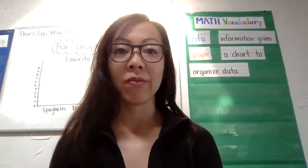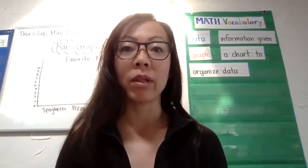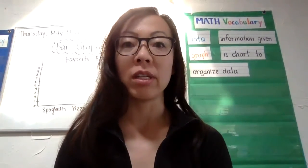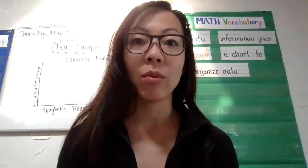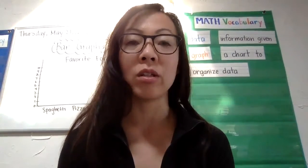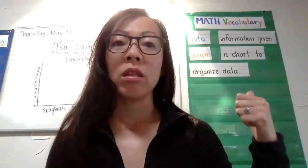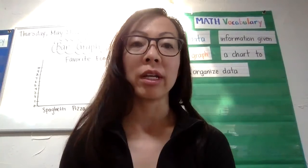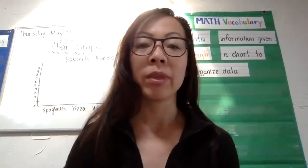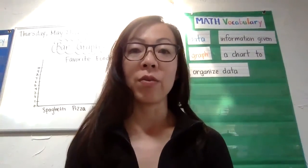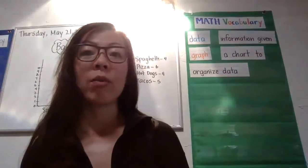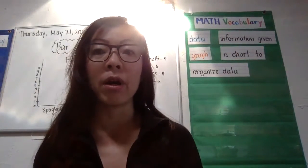Here's some key vocabulary we've been thinking about. The first word is data. Data is information that we're given. When we say the word data, we're talking about the information we're going to use to create a graph. Now, what is a graph? A graph is a chart that organizes our data — it helps us take a quick look and be able to see it. We've been talking about our favorite food and we've made tally charts, pictographs, and today I want to show you how to make a bar graph.